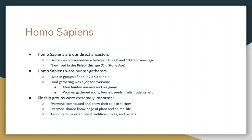Some other really important things are the traditions and rules established by the kinship groups. Basically, these kinship groups established the rules, the regulations, what people are supposed to do, and it provided a sense of security. So it was kind of conforming but also restrictive as well. Think about when you live with your parents — sometimes that can be a little constrictive, but you always know where you can go to be safe.